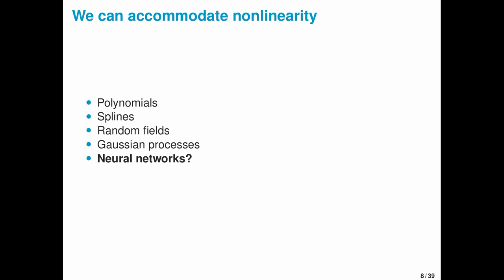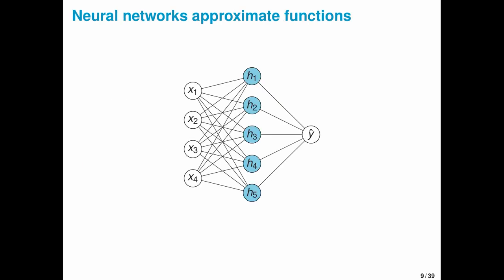But we can also accommodate non-linearity, and there are some really good examples in the literature and that we've seen this past week of people using polynomials, spline basis expansions, and other methods to approximate non-linear mappings from inputs to parameters in science-based hierarchical models. But what about neural networks?